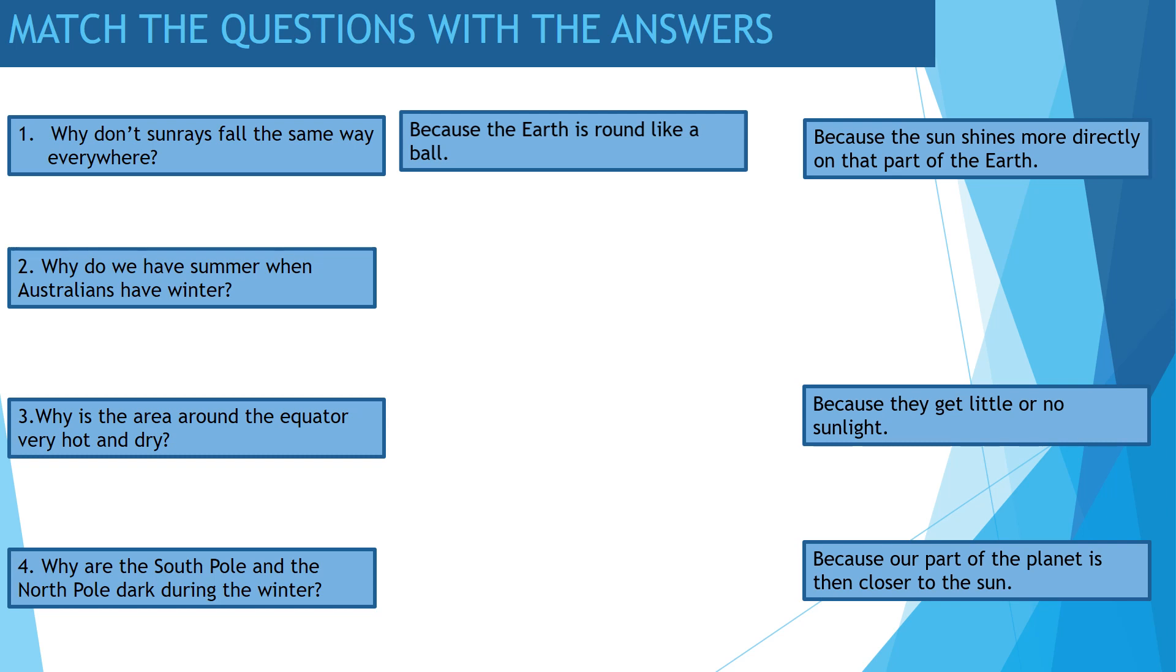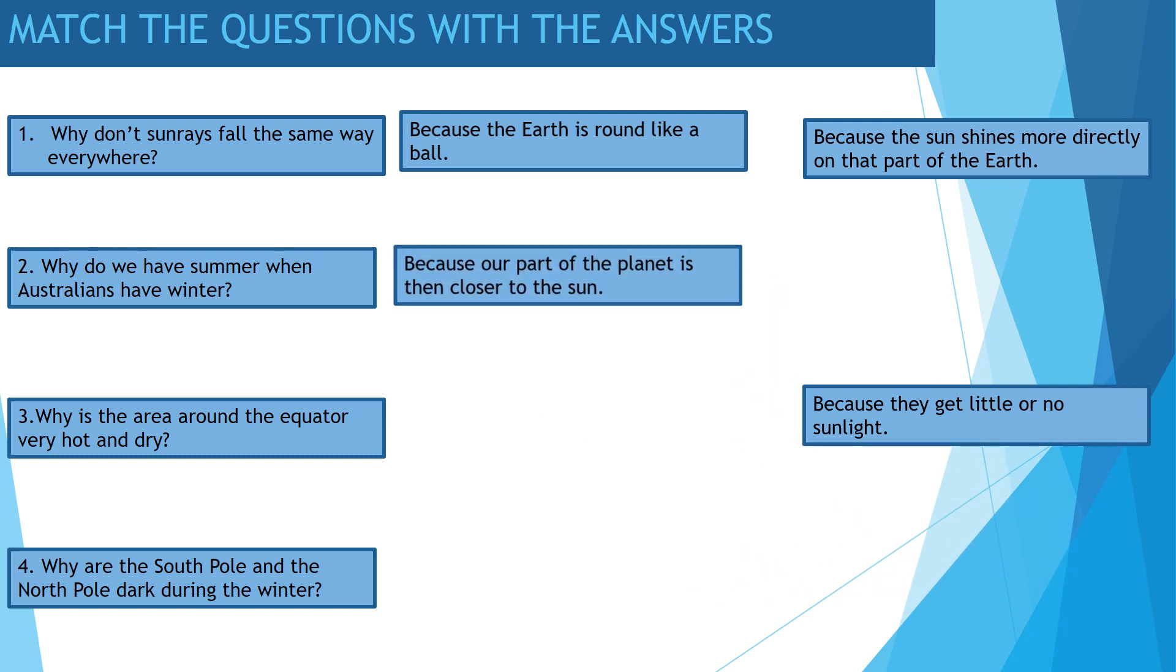Why do we have summer when Australians have winter? Because our part of the planet is then closer to the sun.